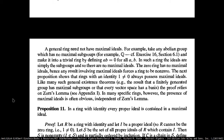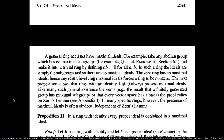A general ring does not necessarily have maximal ideals all the time, because if you have an abelian group which doesn't have maximal subgroups — and they give an example of such a group in section 6.1 exercise 16 — this is part of something related to nilpotent groups and P groups, something we're going to see next week.